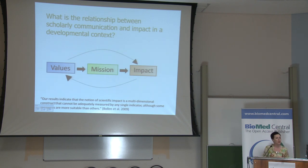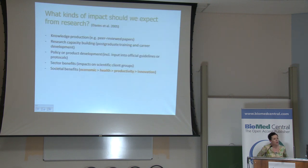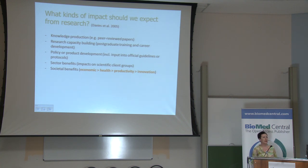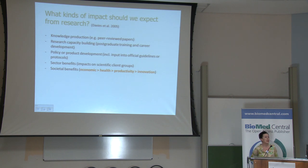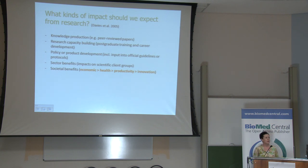There's an interesting dynamic to explore between values and impact. What kinds of impact could we or should we expect from research? The first item — knowledge production — is the commonplace expectation, but there are others: research capacity building, particularly in the African context, is very crucial; the idea of policy or product development; and sector benefits. Eve mentioned the idea of informal business being able to get to research outputs — a really crucial issue in a developing context. And that speaks broadly to societal benefits. We're interested in the open access arguments that drive at productivity, innovation, and job creation.